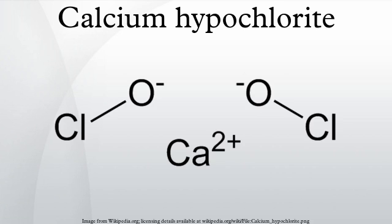Calcium hypochlorite is used for the disinfection of drinking water or swimming pool water. Generally it is sold as 68% calcium hypochlorite combined with calcium chloride and other salts. It is used as a sanitizer in outdoor swimming pools in combination with a cyanuric acid stabilizer, which reduces the loss of chlorine due to ultraviolet radiation. The calcium content hardens the water and tends to clog up some filters.